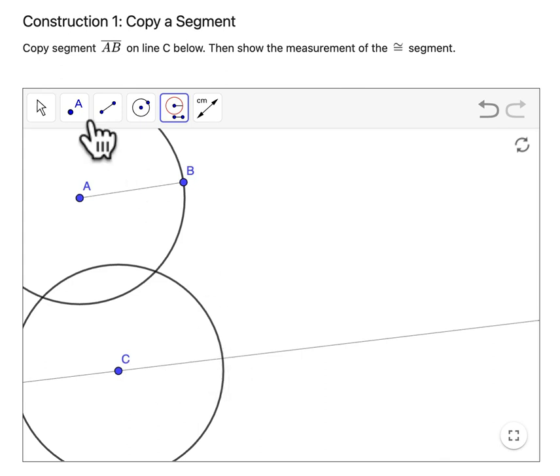And I could make an arc here, but I'll just grab a point, show the intersection, and I'm done. If I now drag my segment over between C and E, I have a congruent segment.